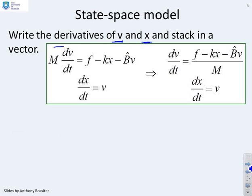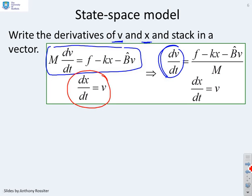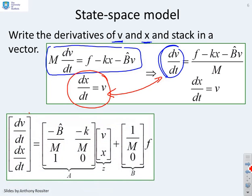So our first equation was this one: m dv/dt equals f minus kx minus b hat v. So if I write the derivative on its own, there it is, dv/dt, you see I get f minus kx minus b hat v over m. Now the next derivative could be given by dx/dt equals v. So the derivative of displacement is velocity. So I can write that by inspection. So now what I'm going to do is take these two derivatives and just stack them into a vector. And there, you can see that's what we've done here. I've written a vector which has stacked those two derivatives. I've put dv/dt as the top element, dx/dt as the bottom element. I could put them the other way up, it doesn't really matter.